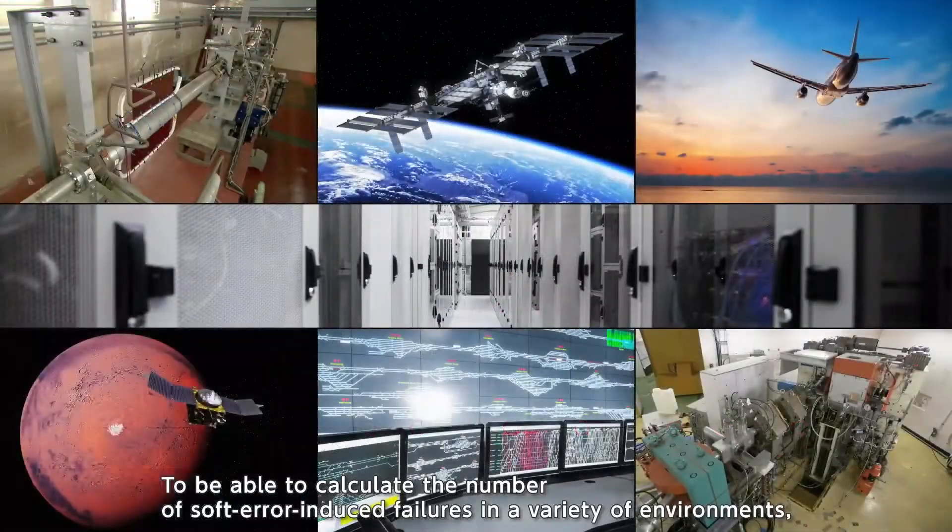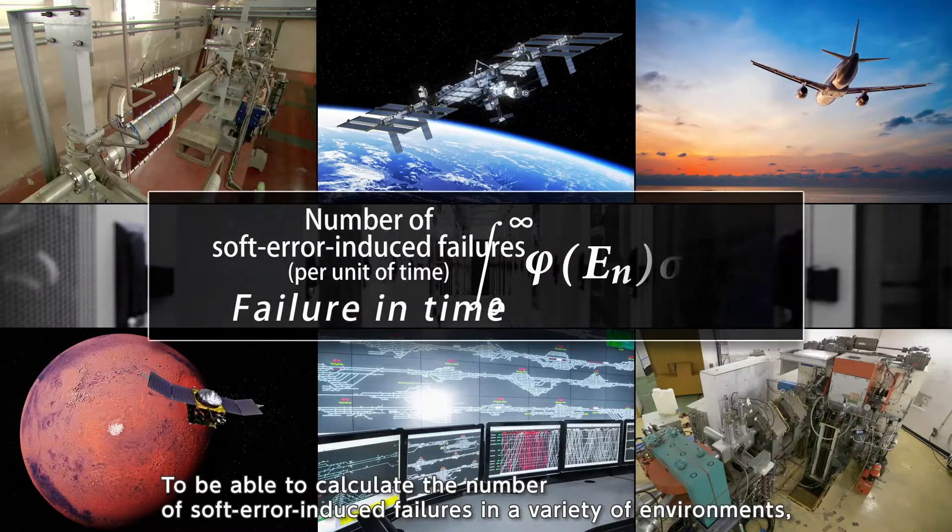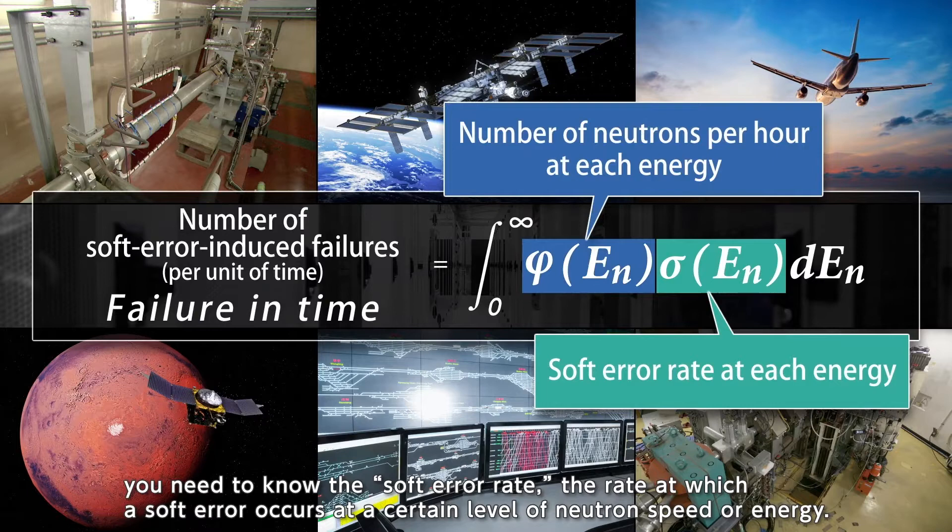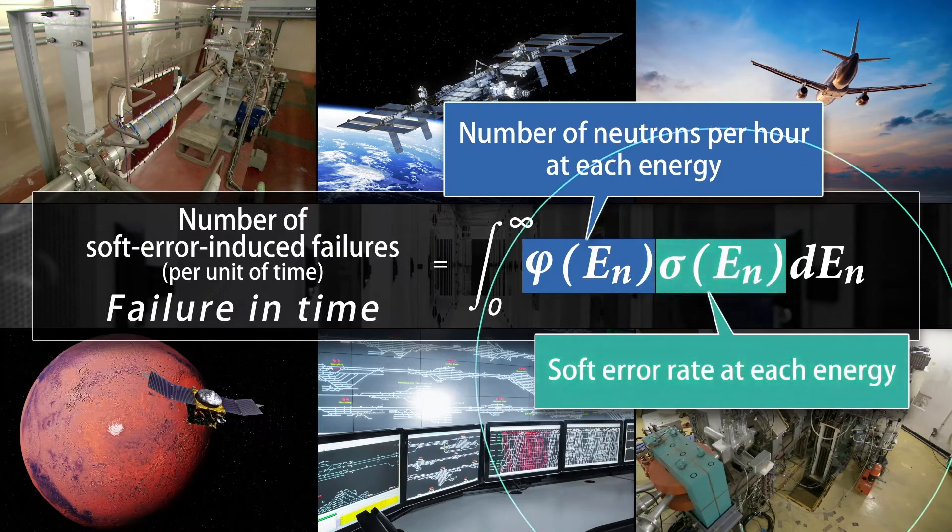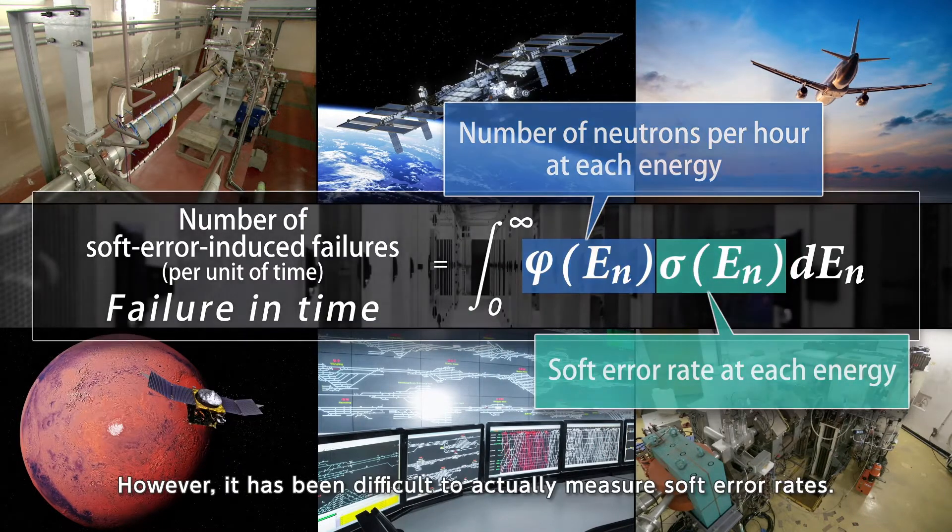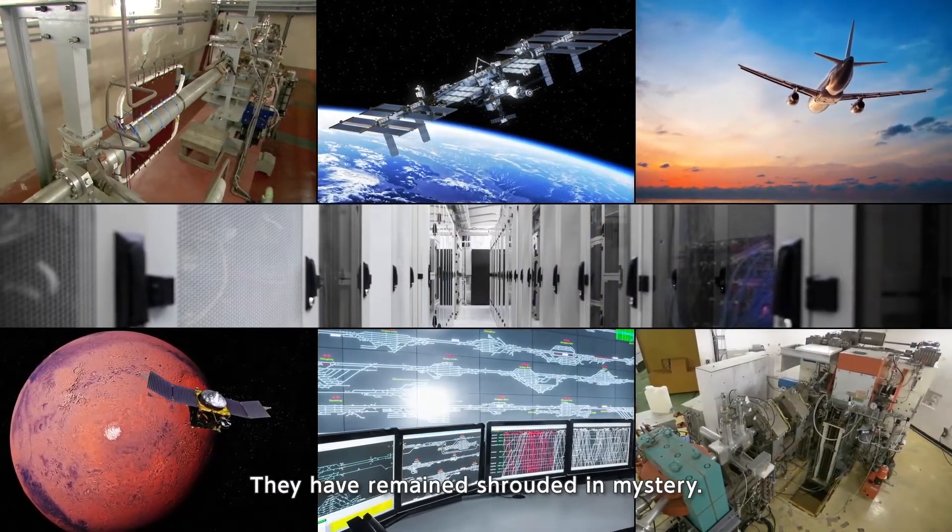To be able to calculate the number of soft error-induced failures in a variety of environments, you need to know the soft error rate, the rate at which a soft error occurs at a certain level of neutron speed or energy. However, it has been difficult to actually measure soft error rates. They have remained shrouded in mystery.